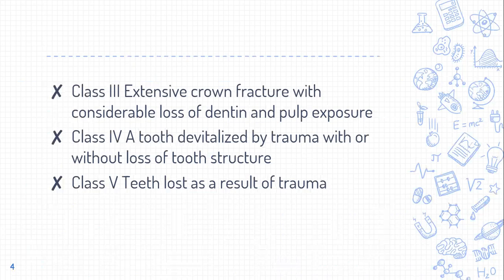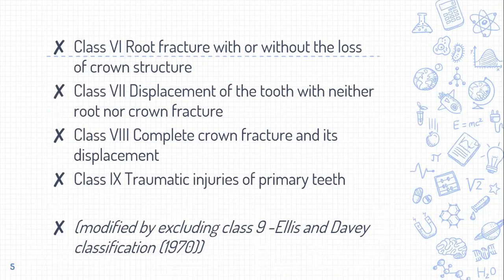Class 4 is the tooth devitalized by trauma, with or without loss of tooth structure — the tooth structure may appear normal but vitality testing shows it is non-vital, indicating long-standing trauma. Class 5 is tooth lost as a result of trauma, otherwise known as avulsion, where the tooth is completely gone. Class 6 is root fracture with or without loss of crown structure.